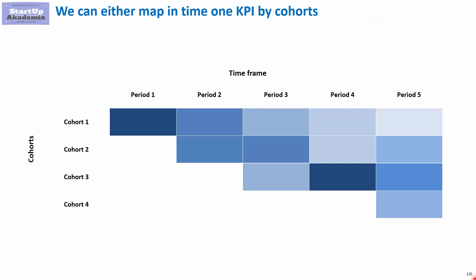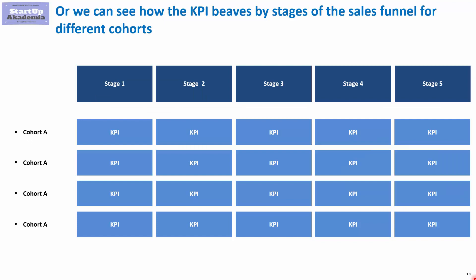The first approach — mapping the KPI in time by cohorts — we discussed in the previous lecture. So now let's concentrate on the second approach: mapping the KPI by stages and cohorts. First we have to name the stages of the sales process, then look at the cohorts, pick the KPI, and measure it by stages and cohorts. Let's have a look at an example to show how it works in practice.